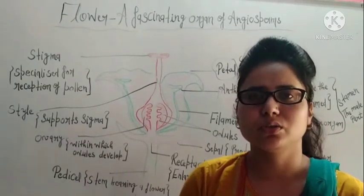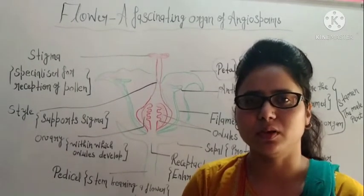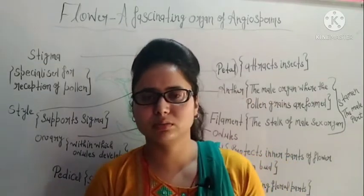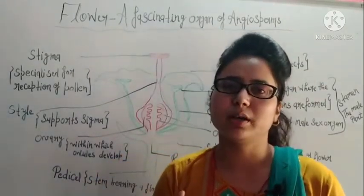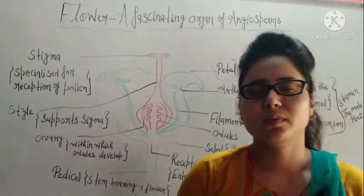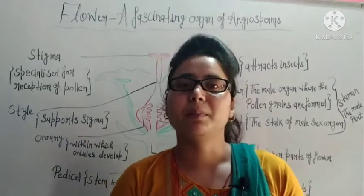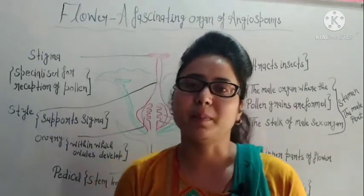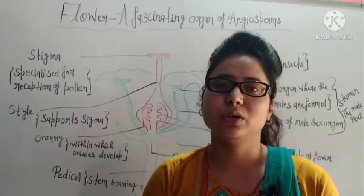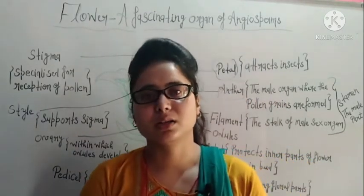You will also see which parts of plants get modified into flowers. The shoot of a plant is modified and forms the flowers. When a shoot develops in a plant, it gets modified and is converted into flowers.